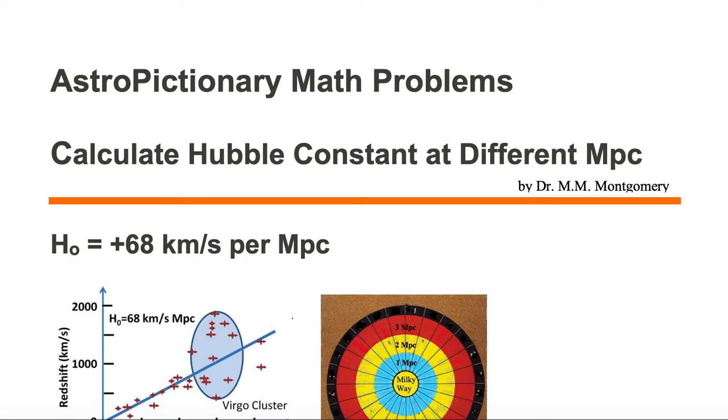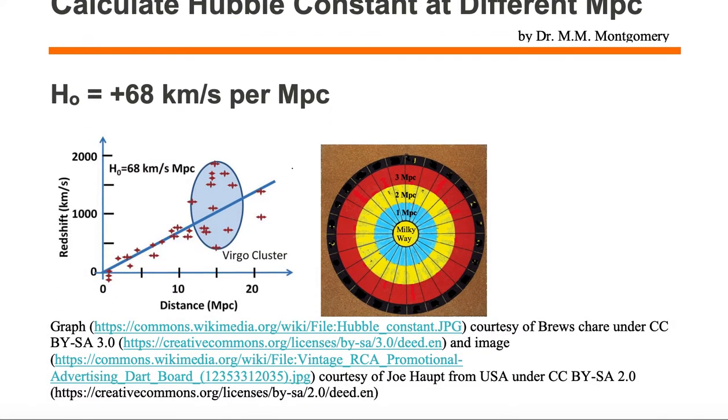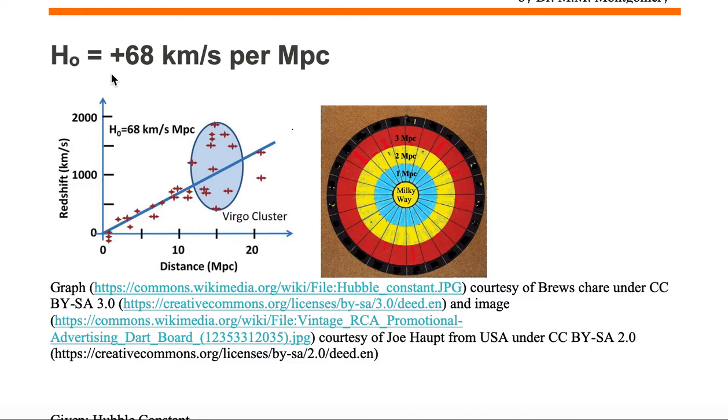We would like to calculate the Hubble constant at different megaparsecs. We're given that the Hubble constant is positive 68 kilometers per second per megaparsec.